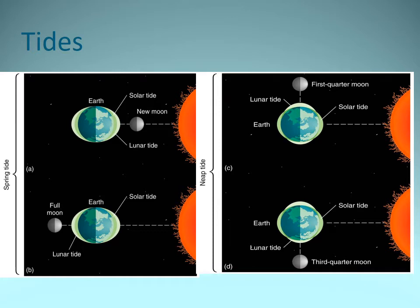When we have times where we have really high tides and then really low tides, we call those spring tides. That occurs when the Earth, moon, and sun are in alignment — making a straight line — and that occurs when we have a new moon or a full moon. We have two high tides and two low tides every single day. But during the new moon and full moon, those high tides are really high and the low tides are really low, so we have a very large tidal range.